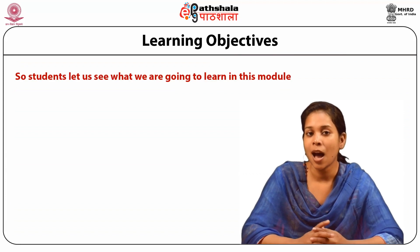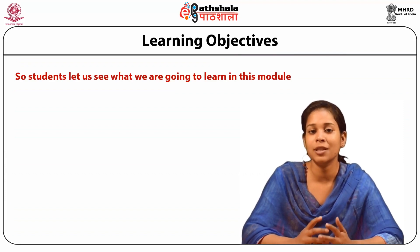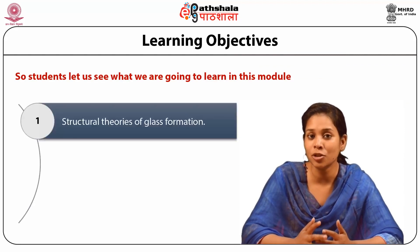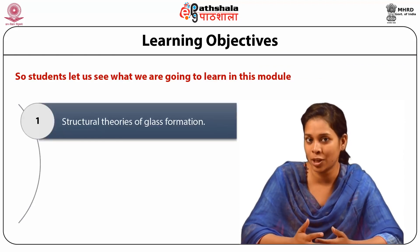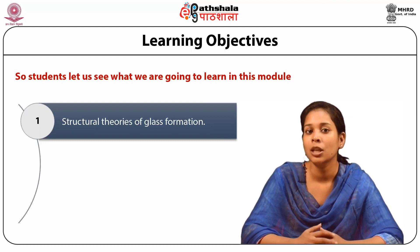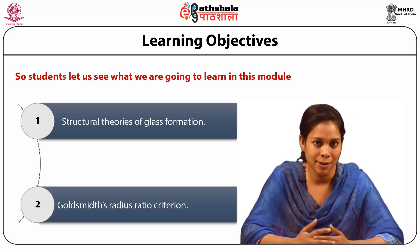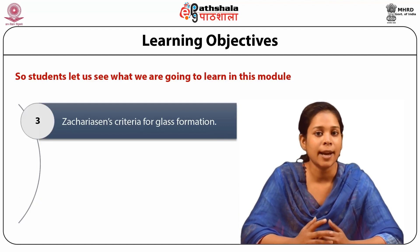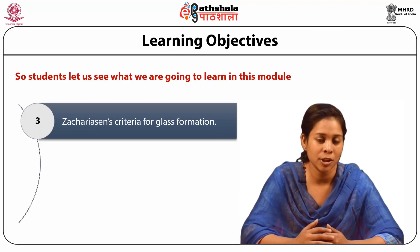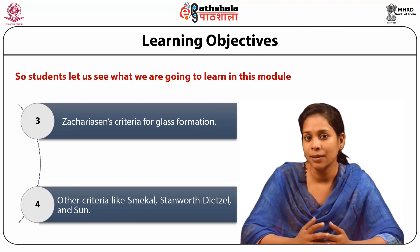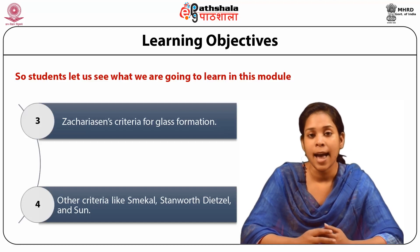After the completion of this module, you all should be able to understand the structural theories of glass formation which includes Goldsmith's radius ratio criteria, the Shearishan criteria for glass formation and various other criteria like Schmeichel, Stanford, Didzel and Sun.